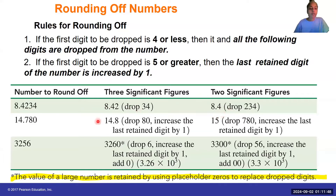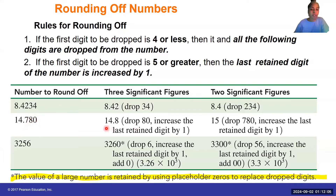What if I wanted to round off this number to three significant figures? Notice that the eight is greater than five, so I'm going to increase this seven to eight and drop off the eight and the zero. So I end up with 14.8.